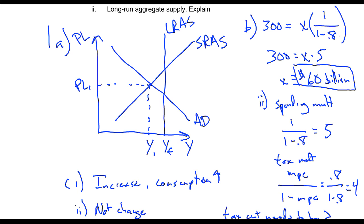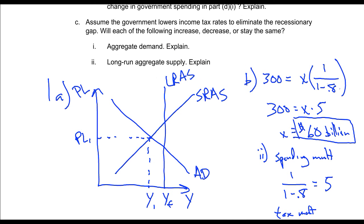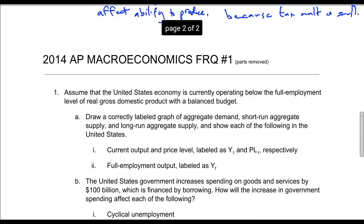The long-run aggregate supply curve will not change. Nothing has changed. The tax rates don't increase the amount that we could possibly produce. The tax change didn't affect our ability to produce. How much we can produce is still how much we can produce. So I would say not change, tax cut doesn't affect ability to produce.